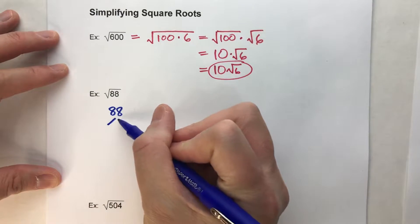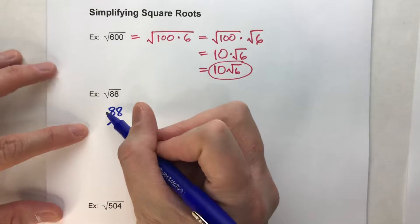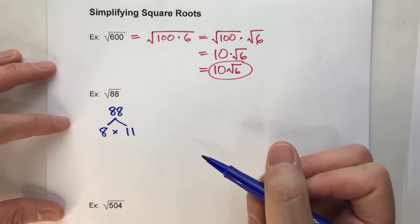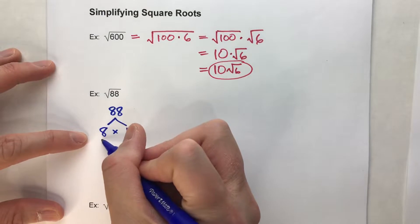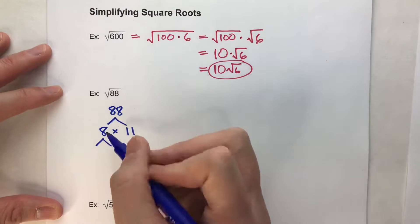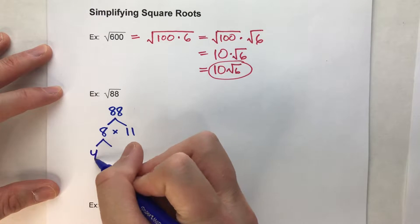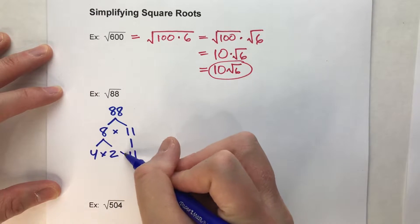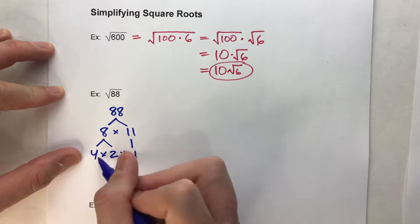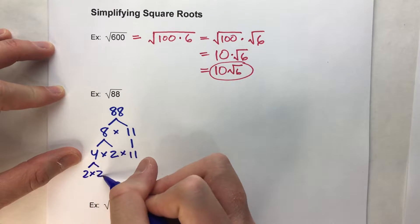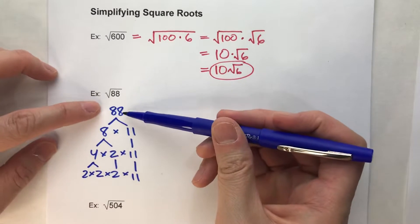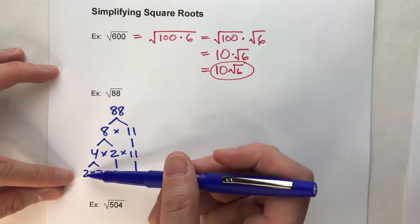If you don't remember factor trees, you probably did this in elementary school. You'd think: what times what equals 88? I know 8 times 11 gets me 88. And 11 is prime, but 8 isn't, so now we've got to break 8 down. We keep going until all we have left are prime numbers. 8 is 4 times 2, and I'll drop down that 11 so everything stays in line. And 4 can be broken down into 2 times 2. Now I've broken 88 down into just prime numbers.